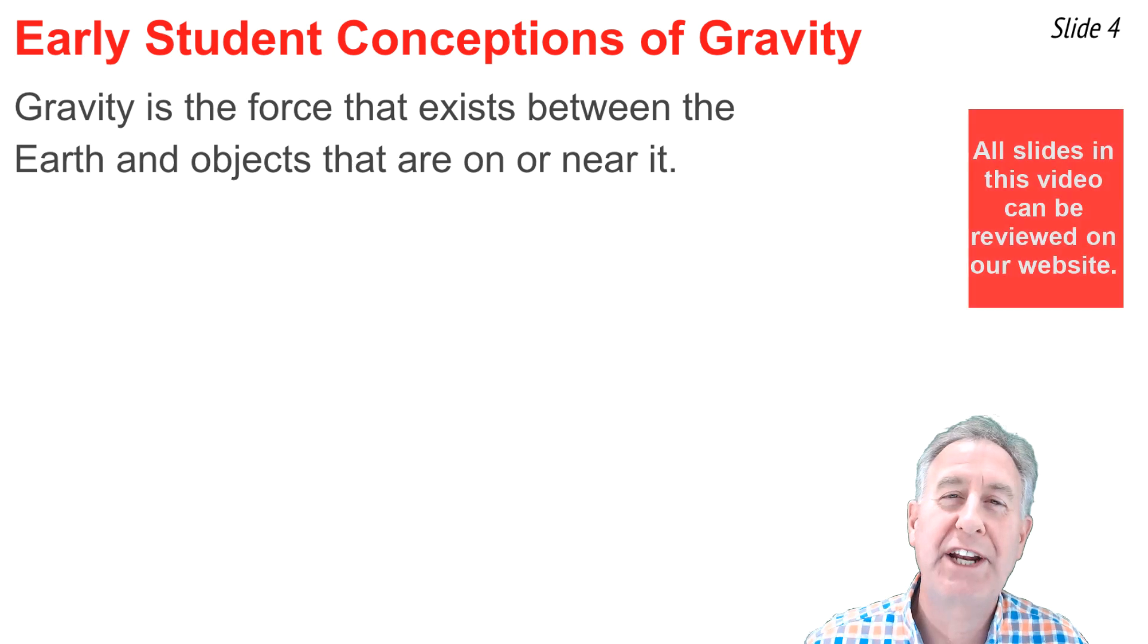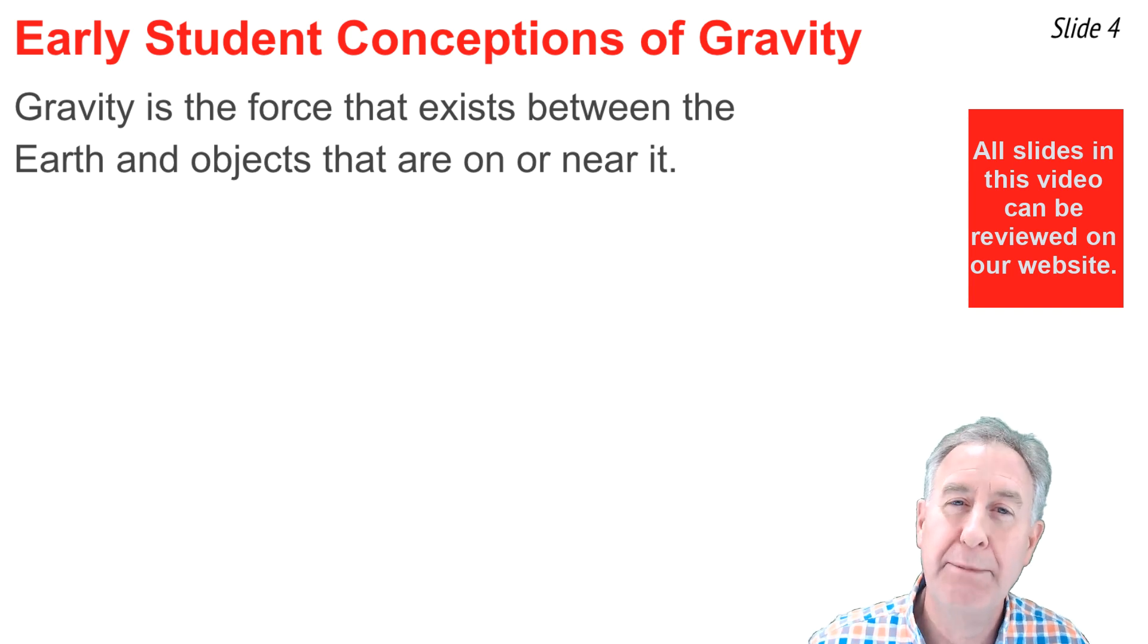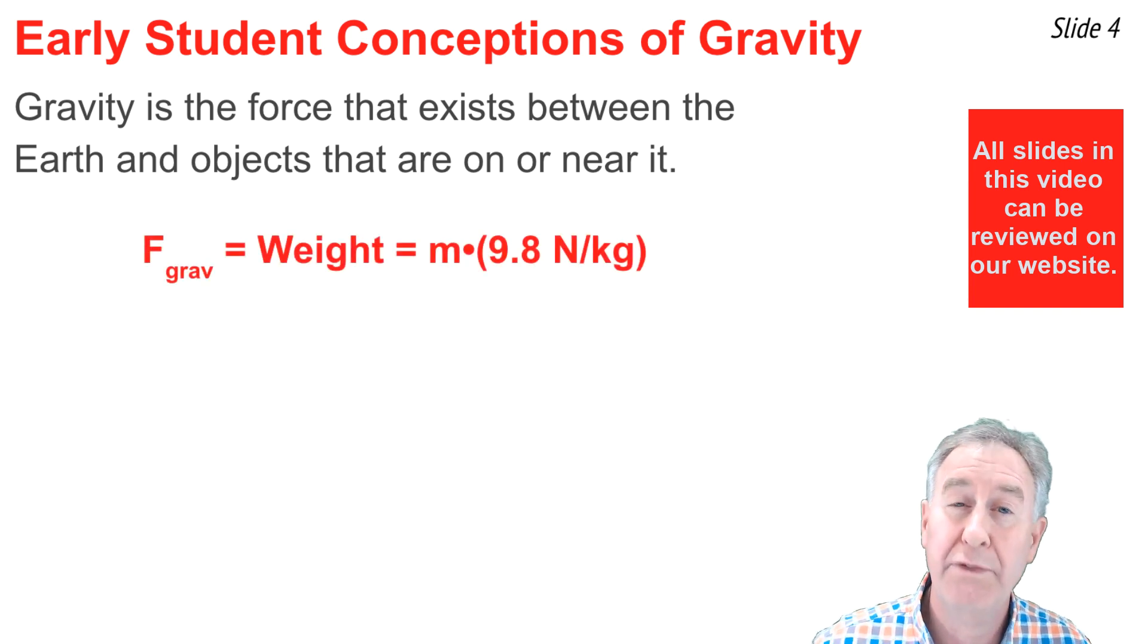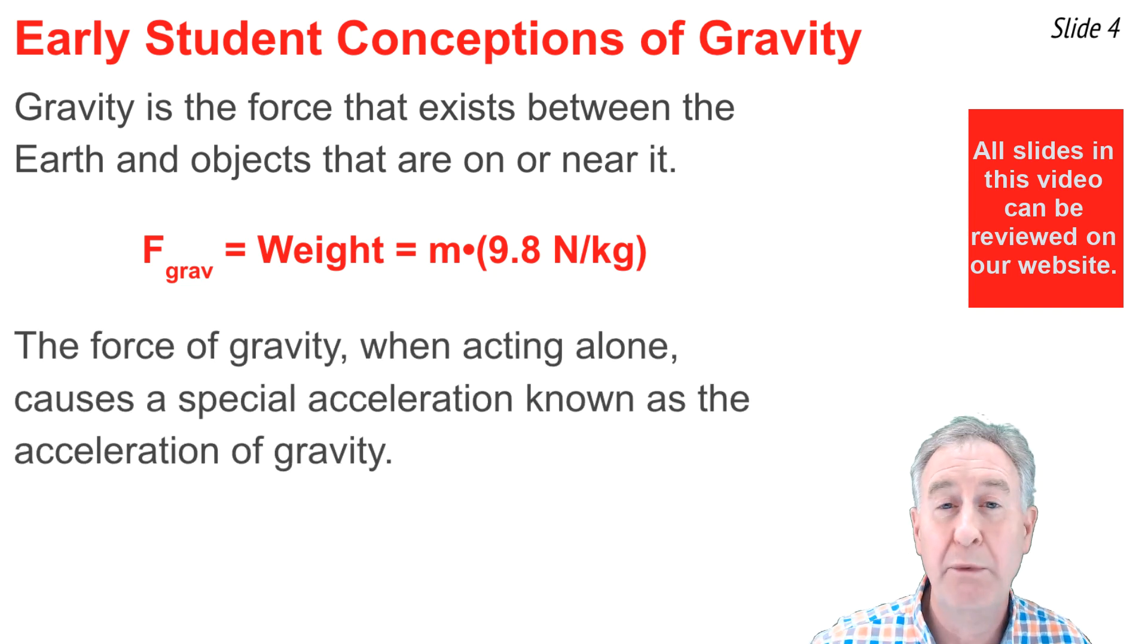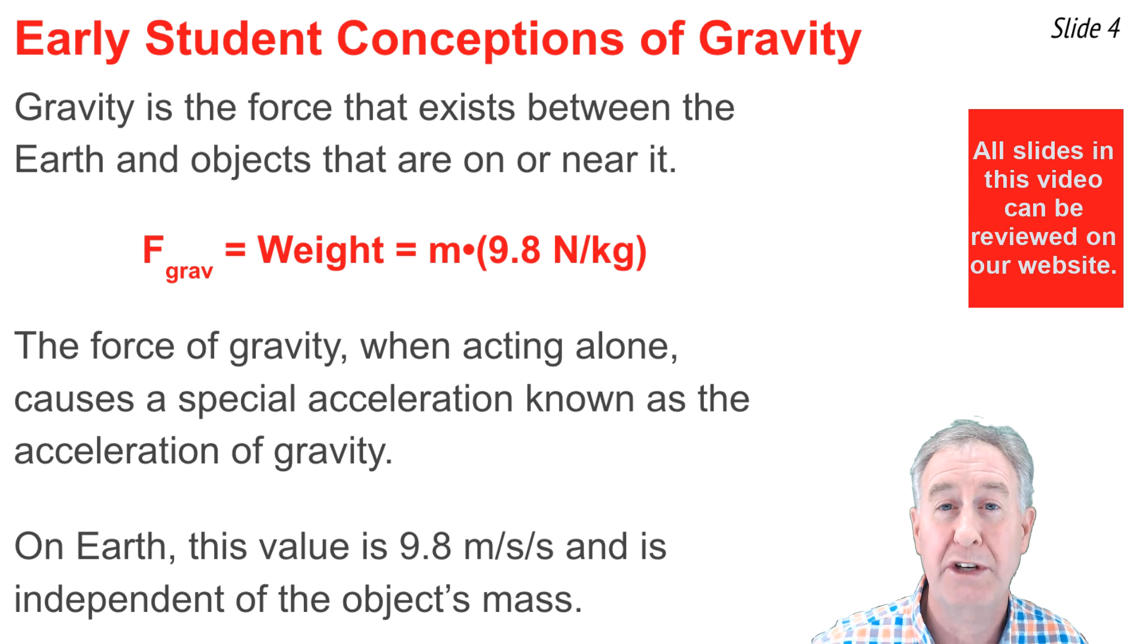This is the circular and satellite motion unit. And by the time a student of physics gets to this unit, they've typically had a unit on kinematics and Newton's laws. And thus, they've learned a thing or two about gravity. For instance, they've learned that gravity is the force that acts between the earth and objects that are on or near it. They've learned that the force of gravity is also known as the weight and can be calculated by taking the mass of the object in kilograms and multiplying by 9.8 newtons per kilogram. They've learned that when acting alone, gravity causes a special acceleration known as the acceleration of gravity. And they've learned that this value for the acceleration of gravity is 9.8 meters per second squared on earth and is independent of the mass of the object.